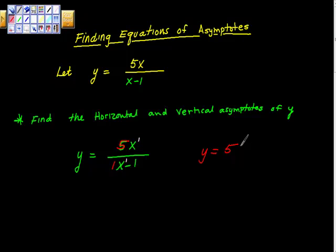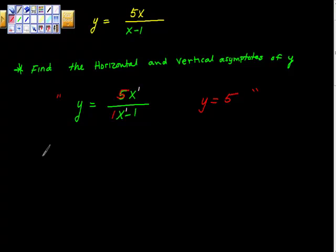There are other rules for how this works, and you should look into them, and I've actually done other videos on this, but this is the problem that came up. Let's find the vertical asymptote. So here's the vertical asymptote.